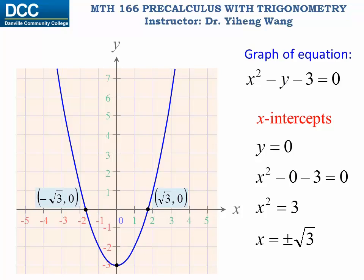Therefore, the coordinates of the x-intercepts are negative square root of three, zero and positive square root of three, zero.